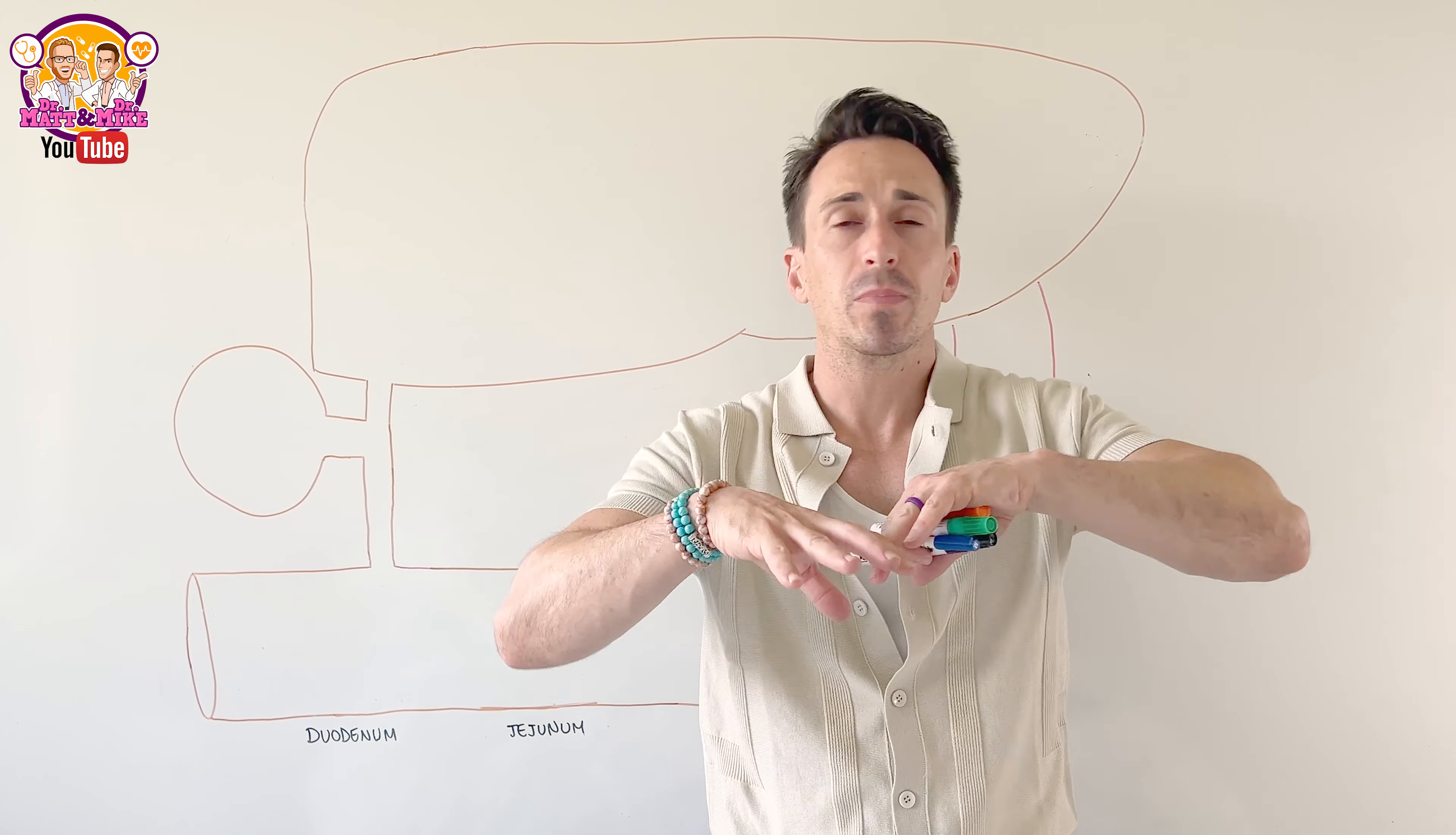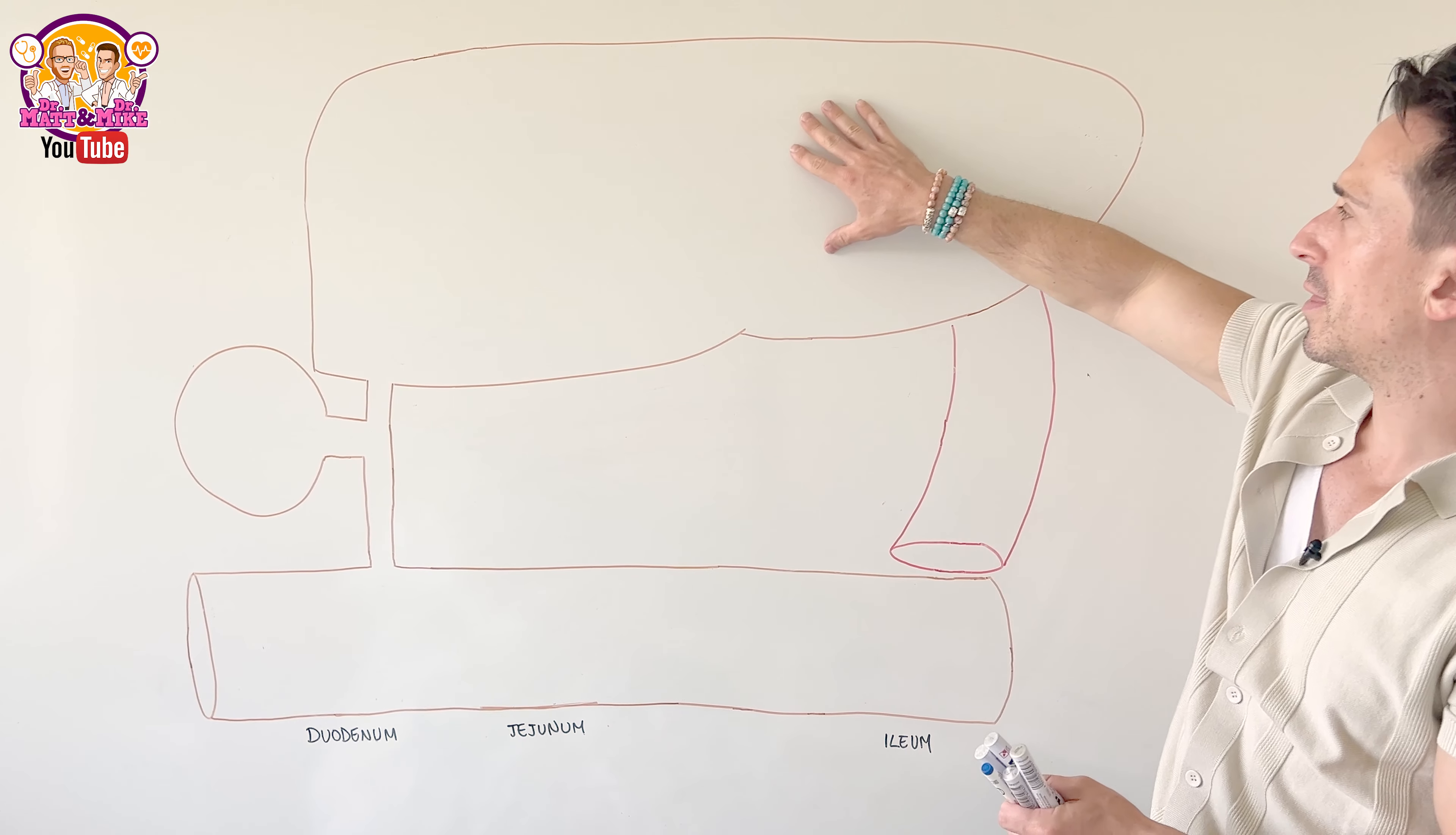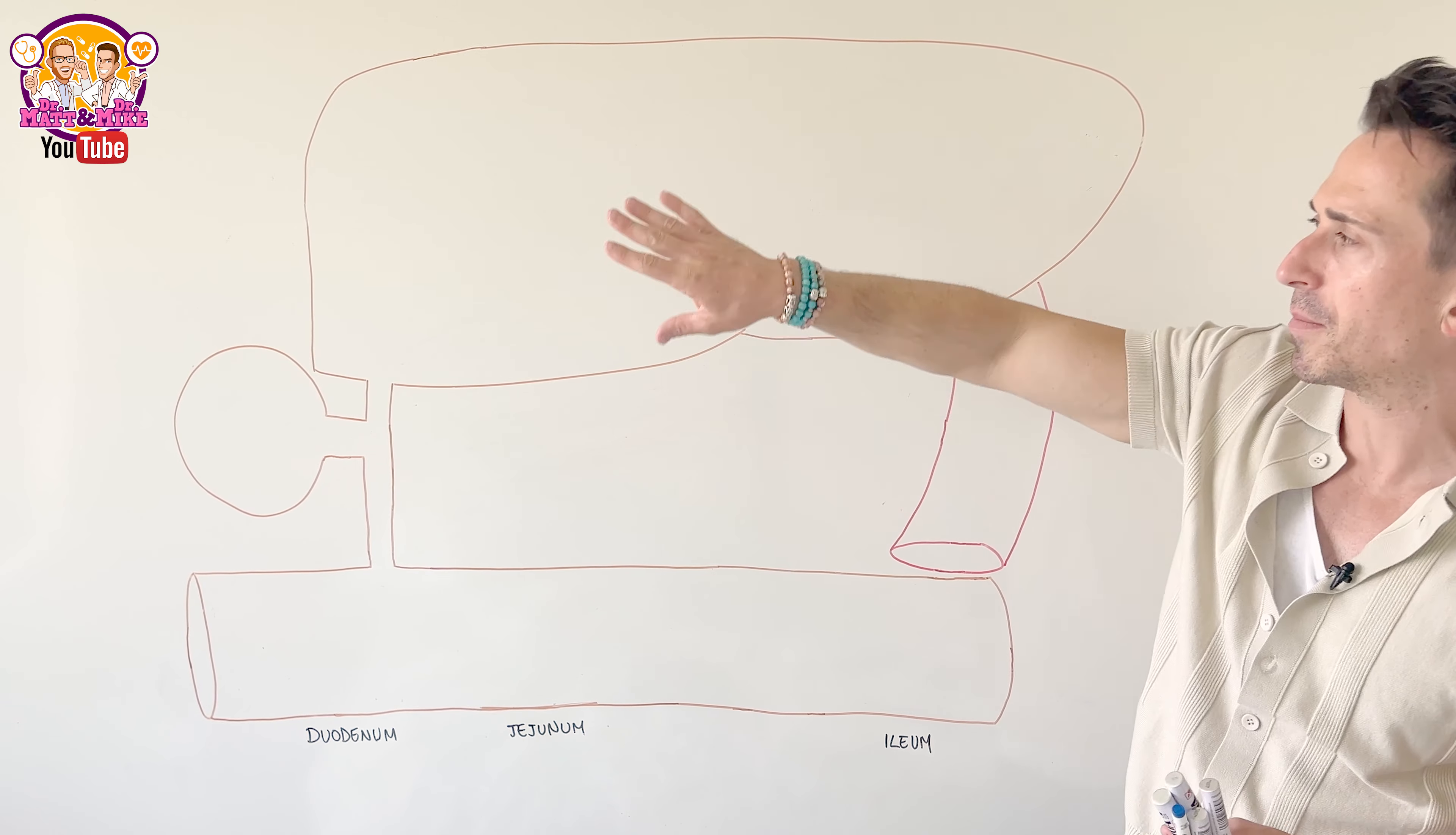Alright, to begin, let's orientate ourselves with what I've drawn up here. So firstly, we've got the liver where this takes place, bile synthesis and bile acid synthesis, specifically in the hepatocyte. Keep that in mind.